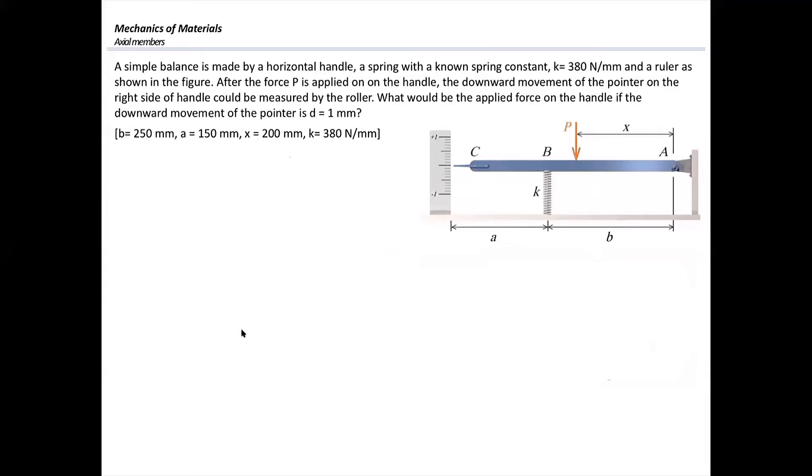A simple balance is made by a horizontal handle, spring, with a known spring constant k equal to 380 newton per millimeter, and a ruler as shown in this figure. The spring constant shows how much force would develop in spring if it's compressed by one unit.